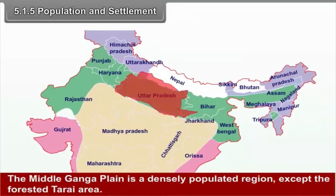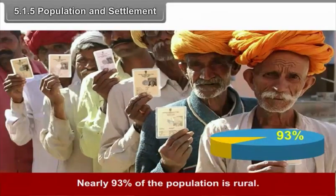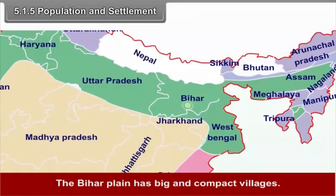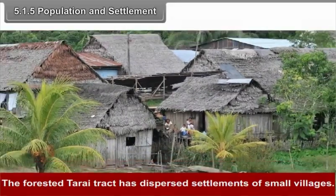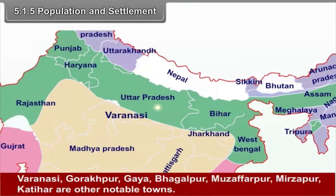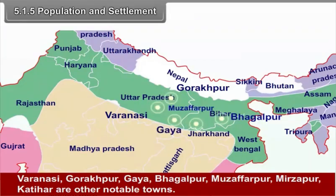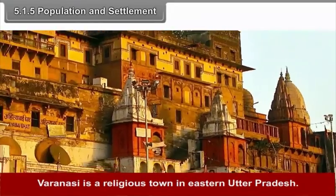The middle Ganga plain is a densely populated region. Except the forested Tarai area, nearly 93% of the population is rural. The Bihar plain has big and compact villages. The forested Tarai tract has dispersed settlements of small villages. Patna is the largest city of the region. Varanasi, Gorakhpur, Gaya, Bhagalpur, Muzaffarpur, Darbhanga and Katihar are other notable towns. Varanasi is a religious town in eastern Uttar Pradesh.